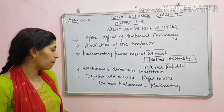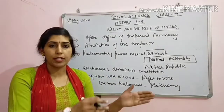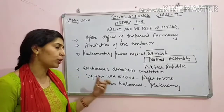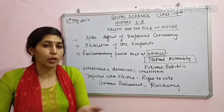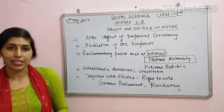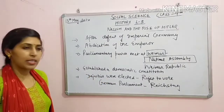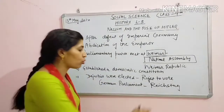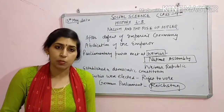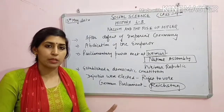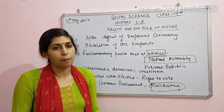Deputies were elected - jo deputies the unko chuna gaya different kaam ke liye. Election ka process tha right to vote - sabko right to vote, universal adult franchise jise kaha jata hai - men, women sabko. So uski help se deputies ko elect kiya gaya. And Germany mein jo parliament bani, usko naam diya gaya - Reichstag. Bohut zyada important hai - aage aap competitive exams mein job participate karenge to question aata hai ki Germany ki jo parliament ka kya naam tha, toh aapko yaad rahe - Reichstag thi Germany ki parliament.